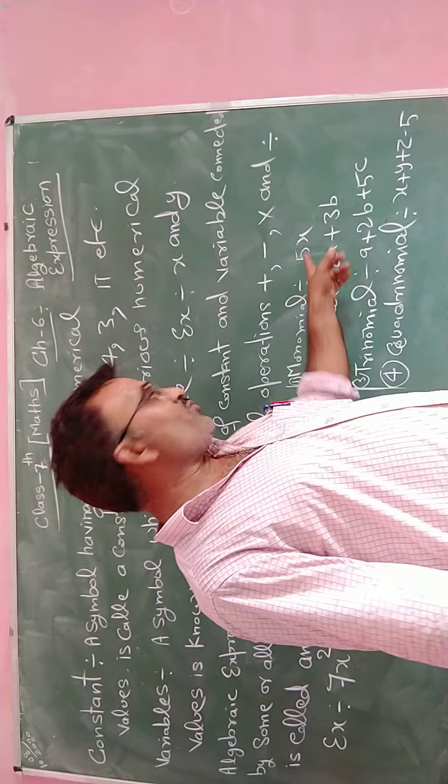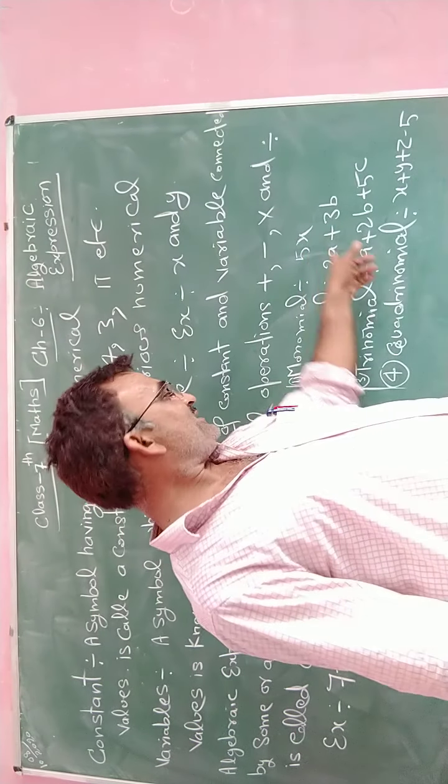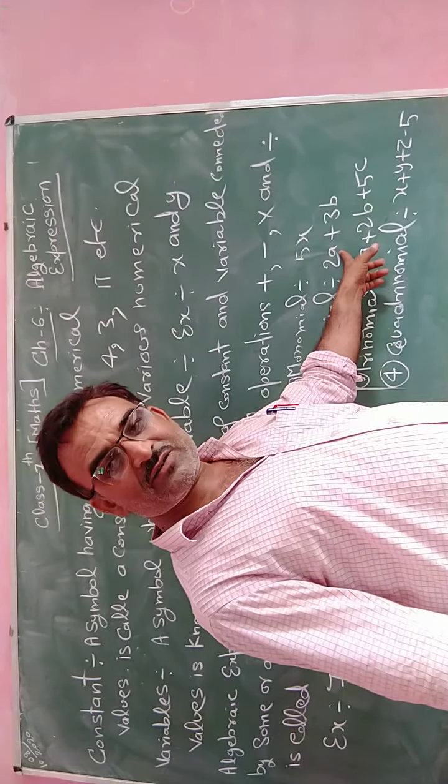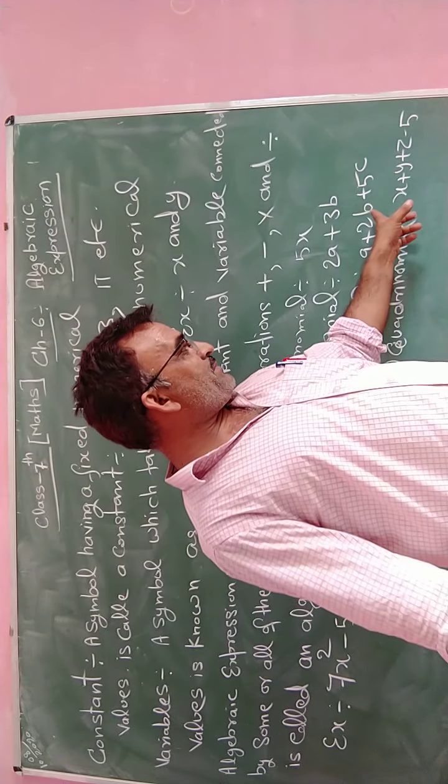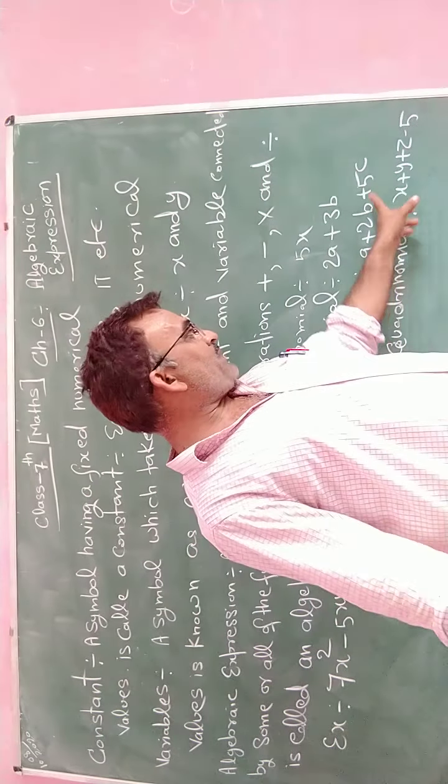Example for monomial: 5x. Example for binomial: 2a plus 3b. Example for trinomial: a plus 2b plus 5c.